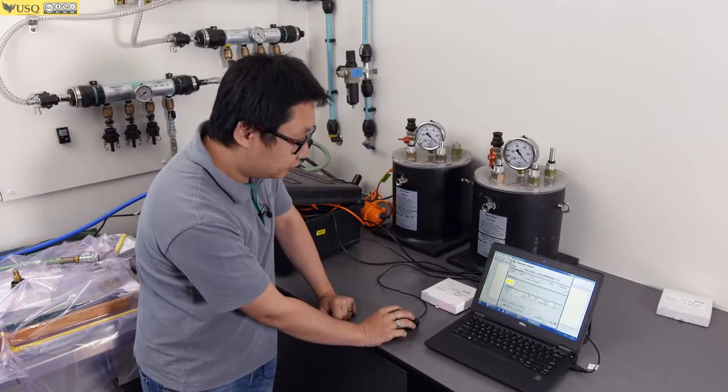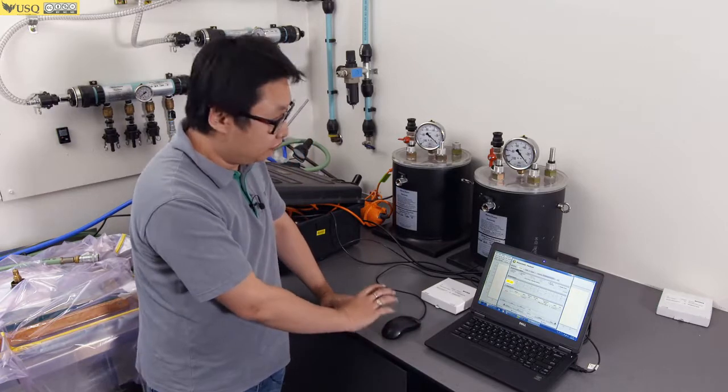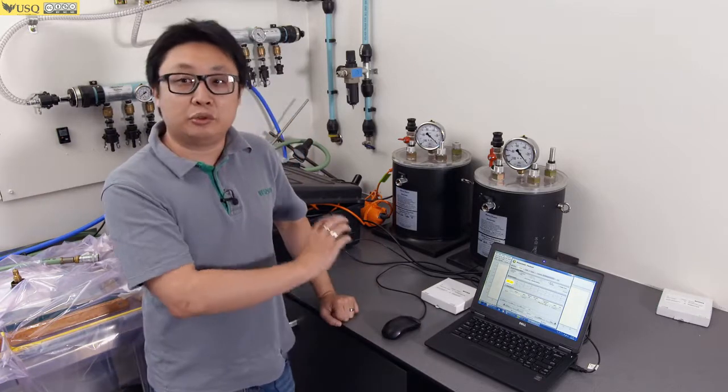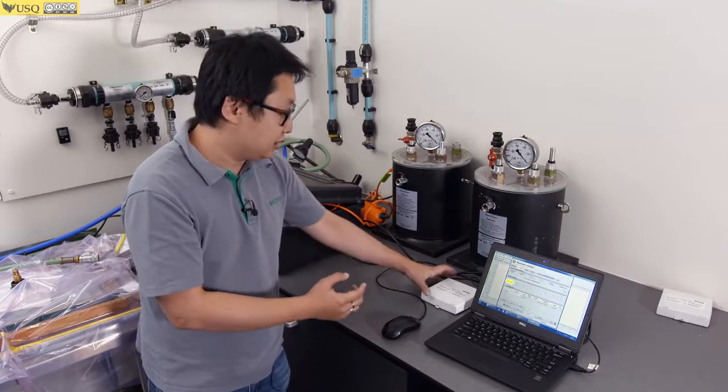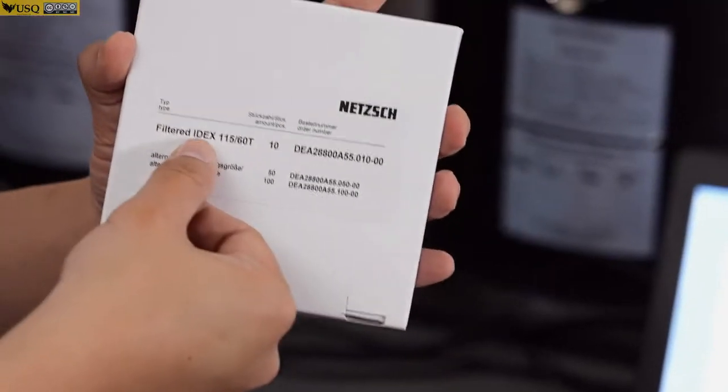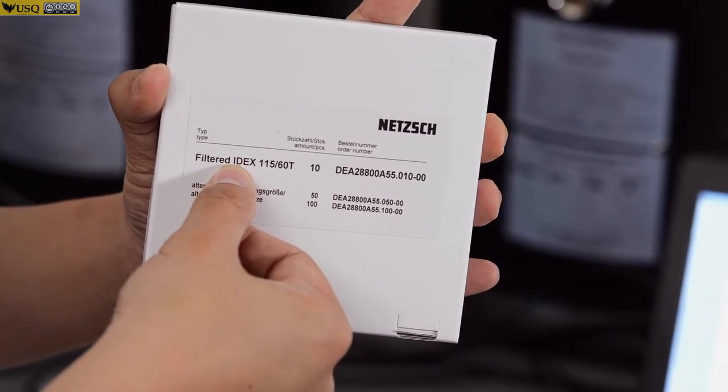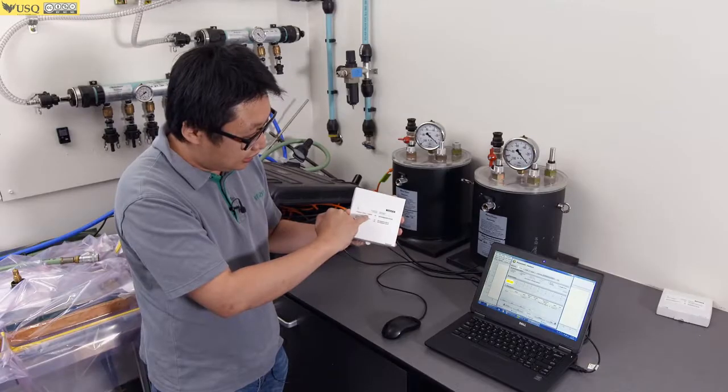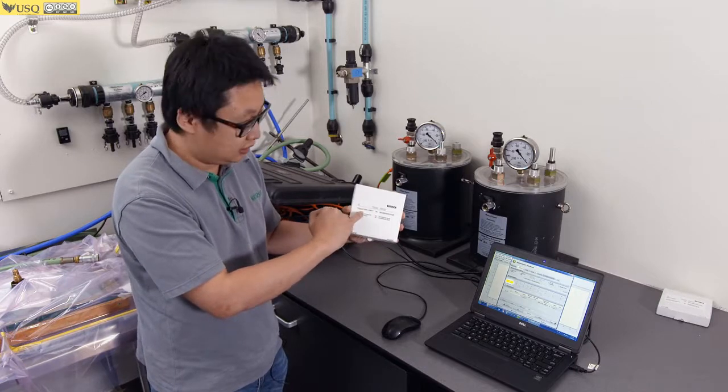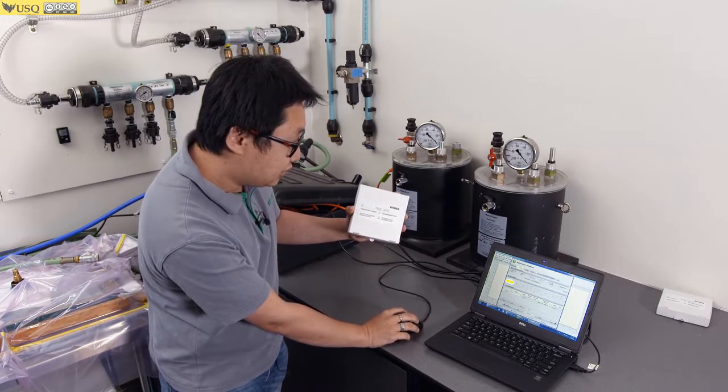Next, channel sensor. First of all, the system doesn't know which sensor you are using. You need to tell the system. From the box, we can see that this is a filter IDX 115-60T. Then, we go select.